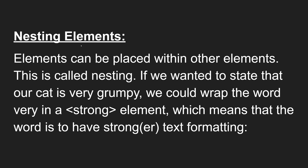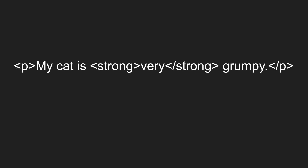Next, let's learn about nesting elements. Elements can be placed within other elements — this is called nesting. For example, if we want to make the word 'very' bold in 'my cat is very grumpy', we can wrap it inside a strong element. So now we have a p element, and inside it we have a strong element. We can have multiple elements inside an element.